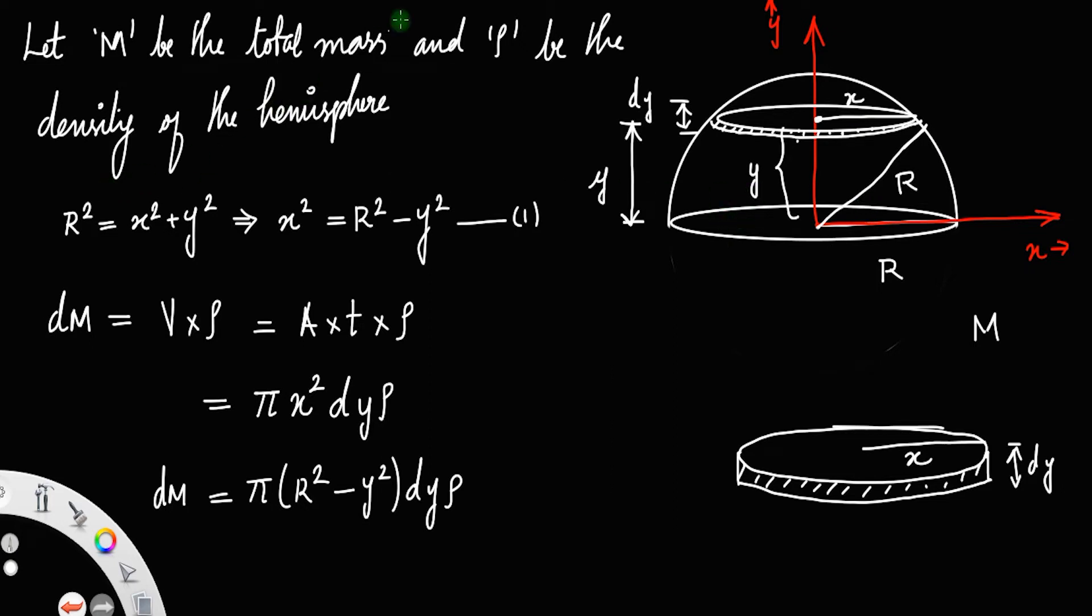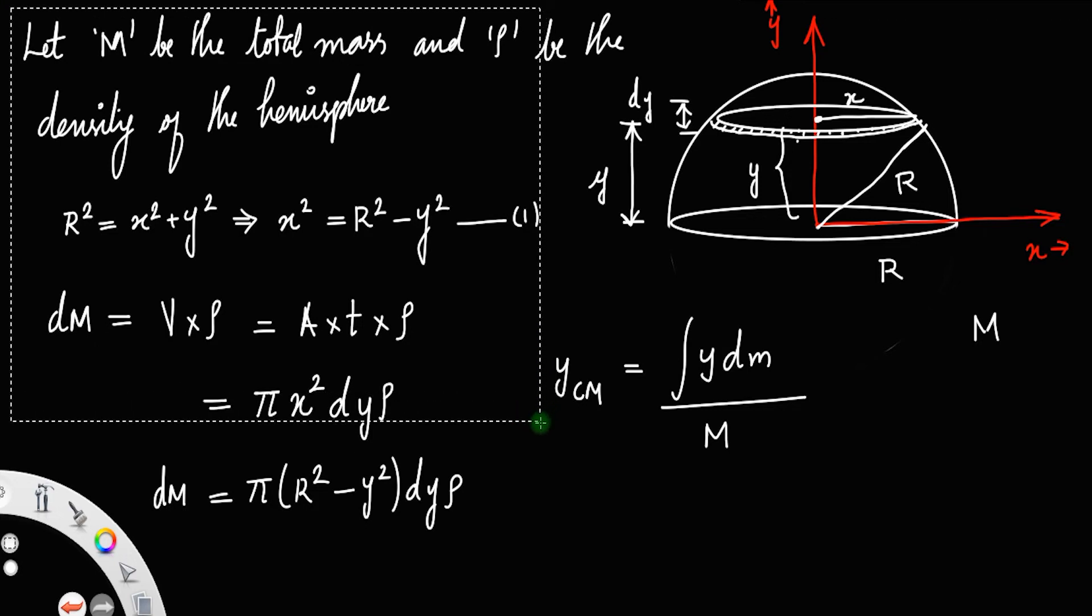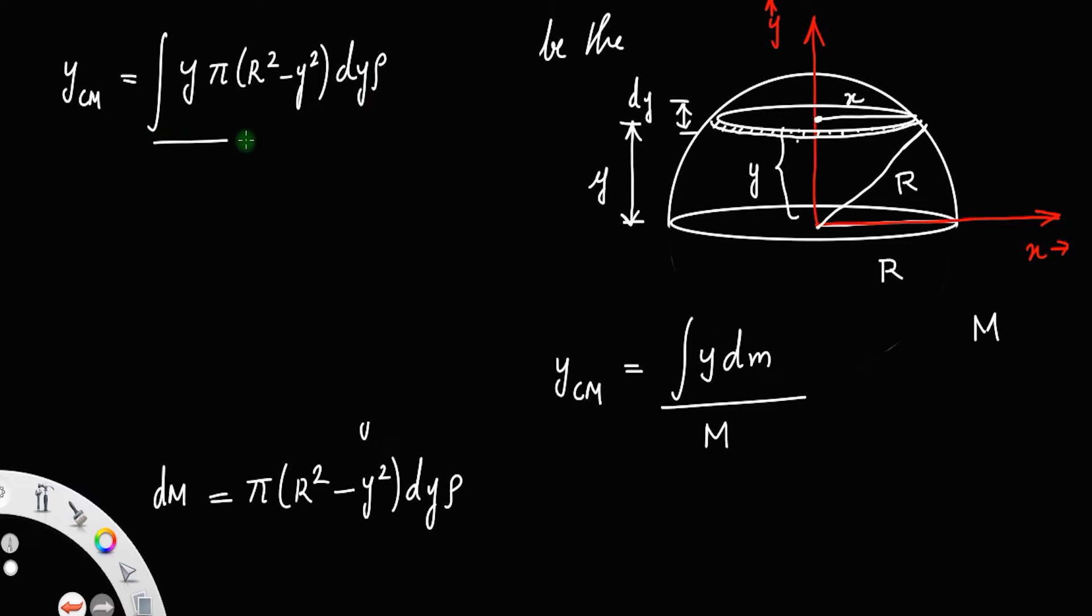The center of mass coordinate y_cm, the equation is integral y dm divided by the whole mass M. Substituting the values, we will get y_cm is equal to integral pi into r squared minus y squared times dy into rho, divided by mass.